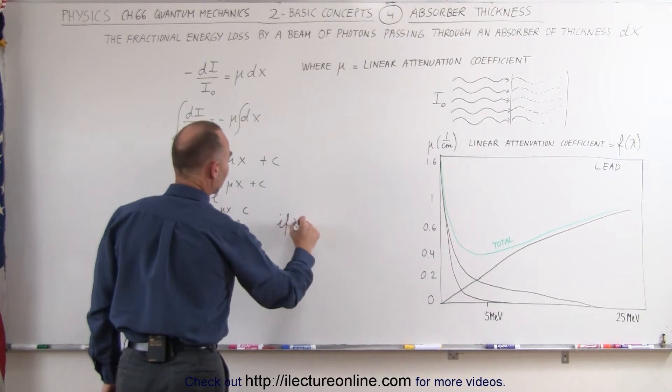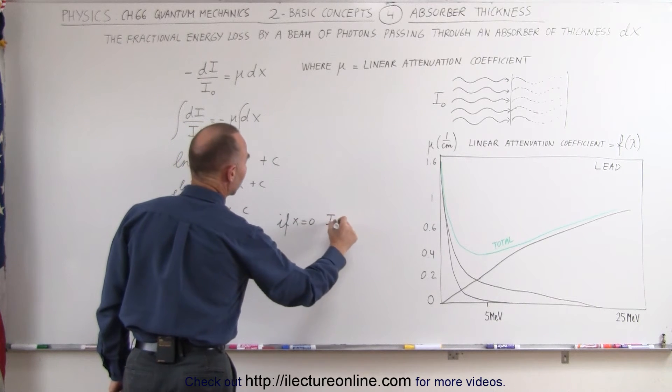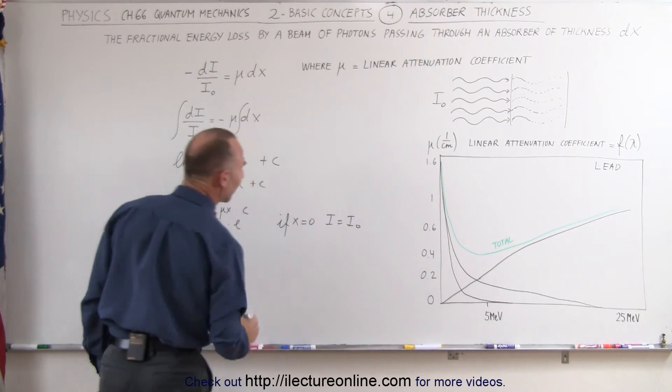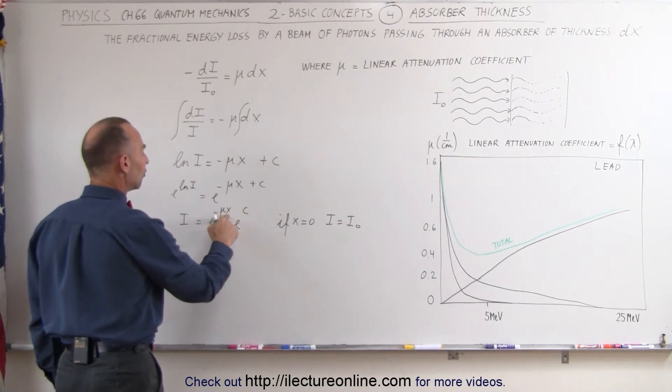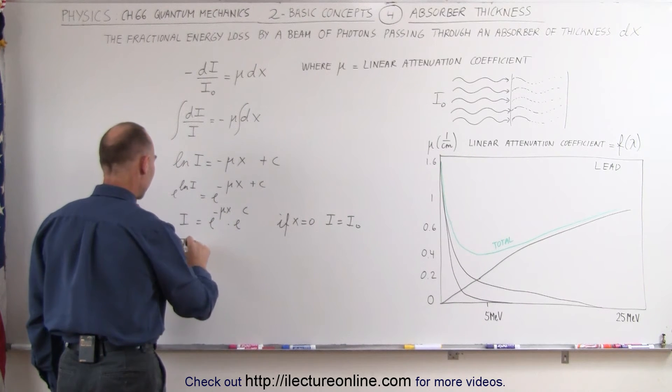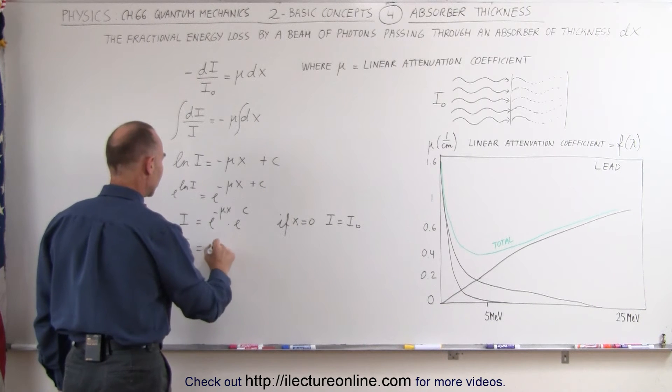If x is equal to zero, I then would be equal to the initial intensity of the beam coming in. So when we set x to zero, e to the zero is one, that means that I sub naught is equal to e to the c.